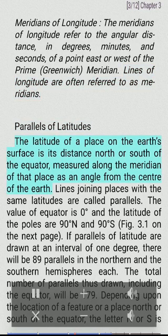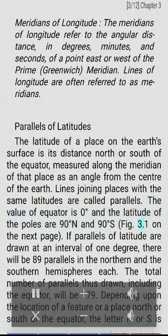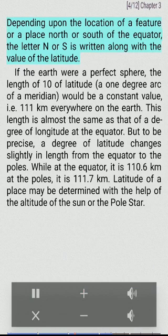The latitude of a place on the Earth's surface is its distance north or south of the equator, measured along the meridian of that place as an angle from the center of the Earth. Lines joining places with the same latitudes are called parallels. The value of the equator is zero degrees and the latitude of the poles are 90 degrees north and 90 degrees south. If parallels of latitude are drawn at an interval of one degree, there will be 89 parallels in the northern and the southern hemispheres each. The total number of parallels thus drawn, including the equator, will be 179. Depending upon the location of a feature or a place north or south of the equator, the letter N or S is written along with the value of the latitude.